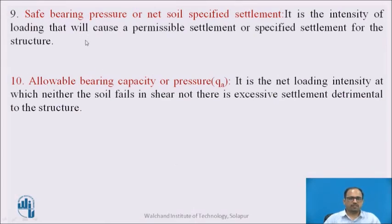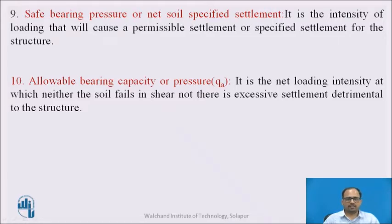The next term is safe bearing capacity for net soil specified settlement. It is the intensity of loading that will cause a permissible or specified settlement for the structure. Next, allowable bearing capacity or pressure, denoted as Q_A, is the net loading intensity at which neither the soil fails in shear nor is there excessive settlement detrimental to the structure. This is called allowable bearing capacity.